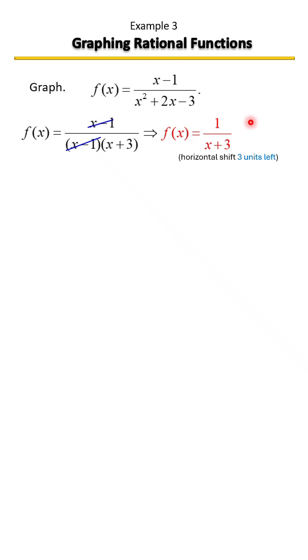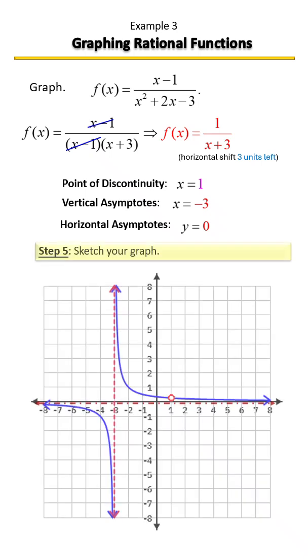Notice that the graph we're left with is really the parent function that has been shifted three units to the left. But let's use everything that we've gathered so far: the hole in the graph or the point of discontinuity, remember that was at one, our vertical asymptote, our horizontal asymptote. Let's use all of that and sketch our graph. So this is what it looks like.